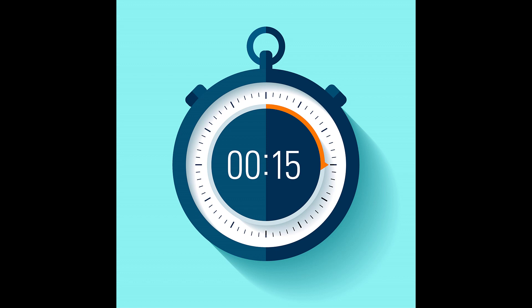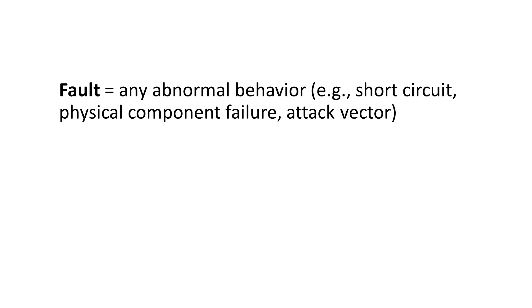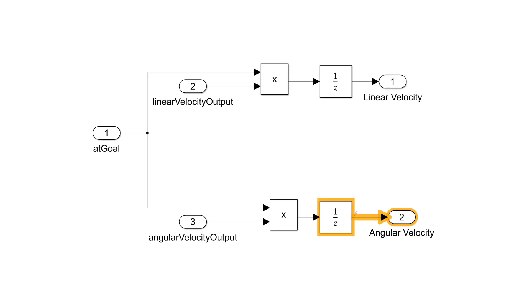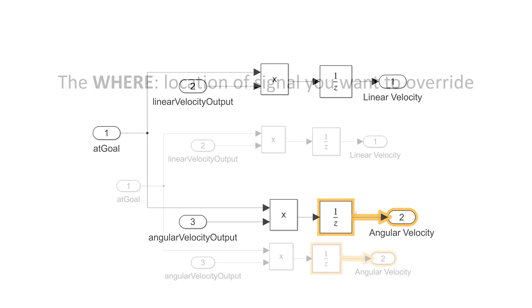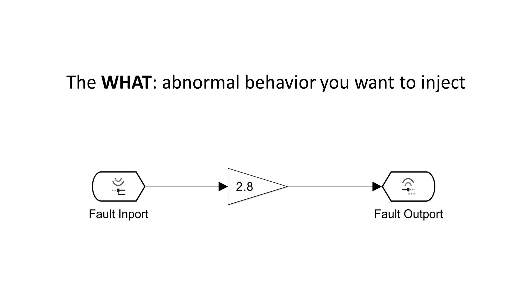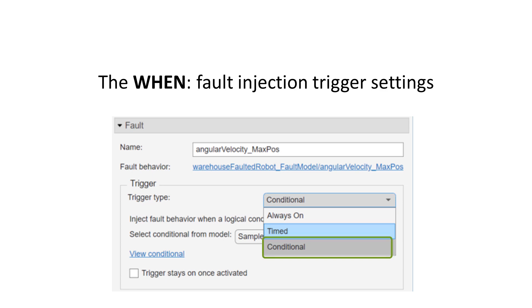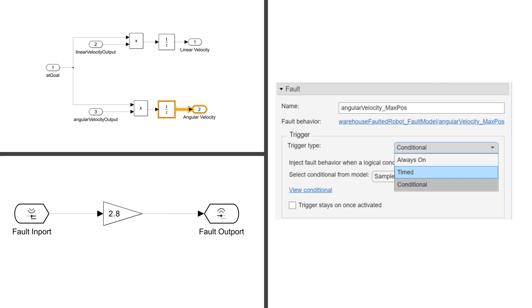Wait a minute — enable and activate? Let's take a step back and talk about faults. When I say fault, I am referring to any abnormal behavior you want to simulate. In most cases, you want to override the behavior of a signal during simulation. I like to think of a fault as having three properties. The first is the WHERE, which is the location of the signal you want to override — defined as model elements such as a block inport or outport. The WHAT is the abnormal behavior you want to inject on the signal, modeled in a separate file called a fault model. Finally is the WHEN: you can inject a fault at the beginning of simulation, after a given simulation time, or based on a system condition. If you combine all three, you have an instance of a fault.